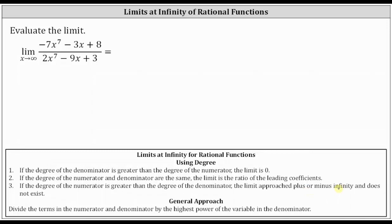So going back to our limit, let's determine the degree of the numerator and denominator. Remember, the degree of a polynomial in one variable is equal to the highest power on the variable. The numerator has degree seven. The denominator also has degree seven.